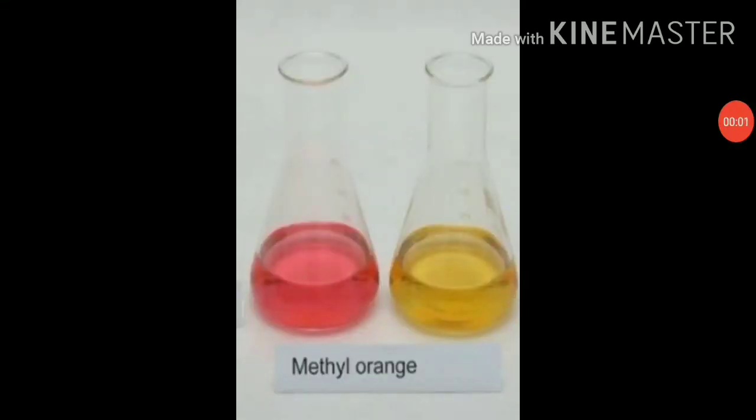Let's talk about synthetic indicators. Synthetic indicators are those made in the laboratory — they are man-made indicators. One common example is methyl orange. Methyl orange originally has an orange color. It turns red in acidic medium and yellow in basic medium.